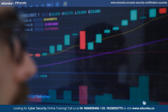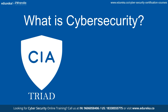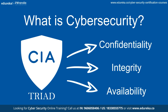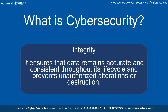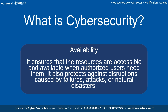First, we have the CIA triad, which stands for confidentiality, integrity, and availability. Confidentiality means making sure only the right people can see the information — for example, having a password to protect our email. Integrity means making sure the information is correct and hasn't been changed — for example, checking if a file has been edited without your permission. Availability means making sure the information is there when you need it — for example, a website that is always working so you can use it anytime.